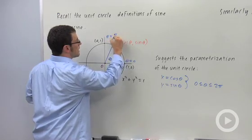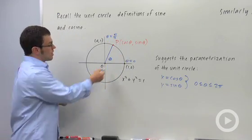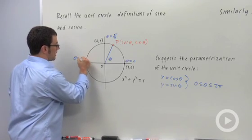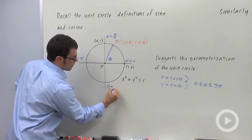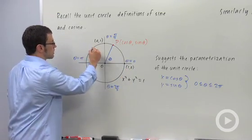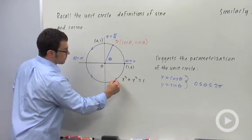What this tells us is that as theta advances, we're going around the circle counterclockwise. We'll be here at π, here at 3π over 2, and back here again at 2π. So the direction of the parametrization is counterclockwise. That's important.